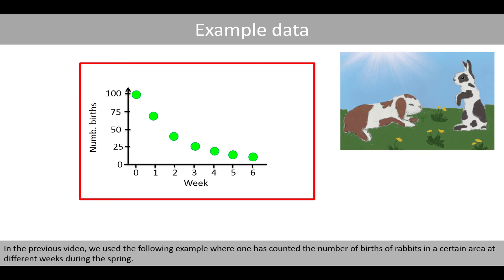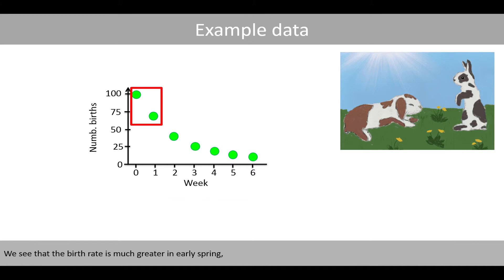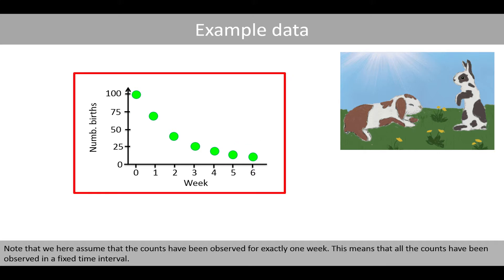In the previous video we used the following example where one has counted the number of births of rabbits in a certain area at different weeks during the spring. We see that the birth rate is much greater in early spring compared to late spring. Note that we here assume that the counts have been observed for exactly one week. This means that all the counts have been observed in a fixed time interval.